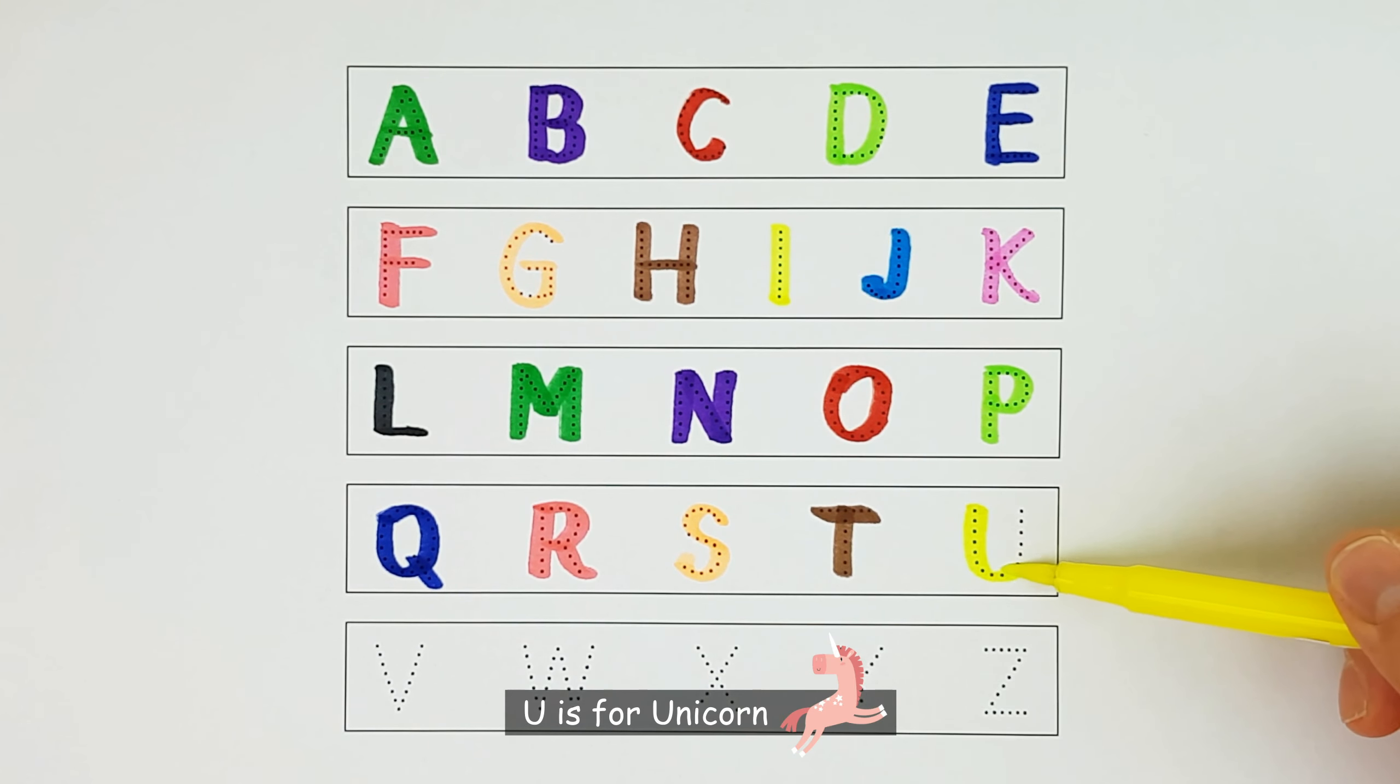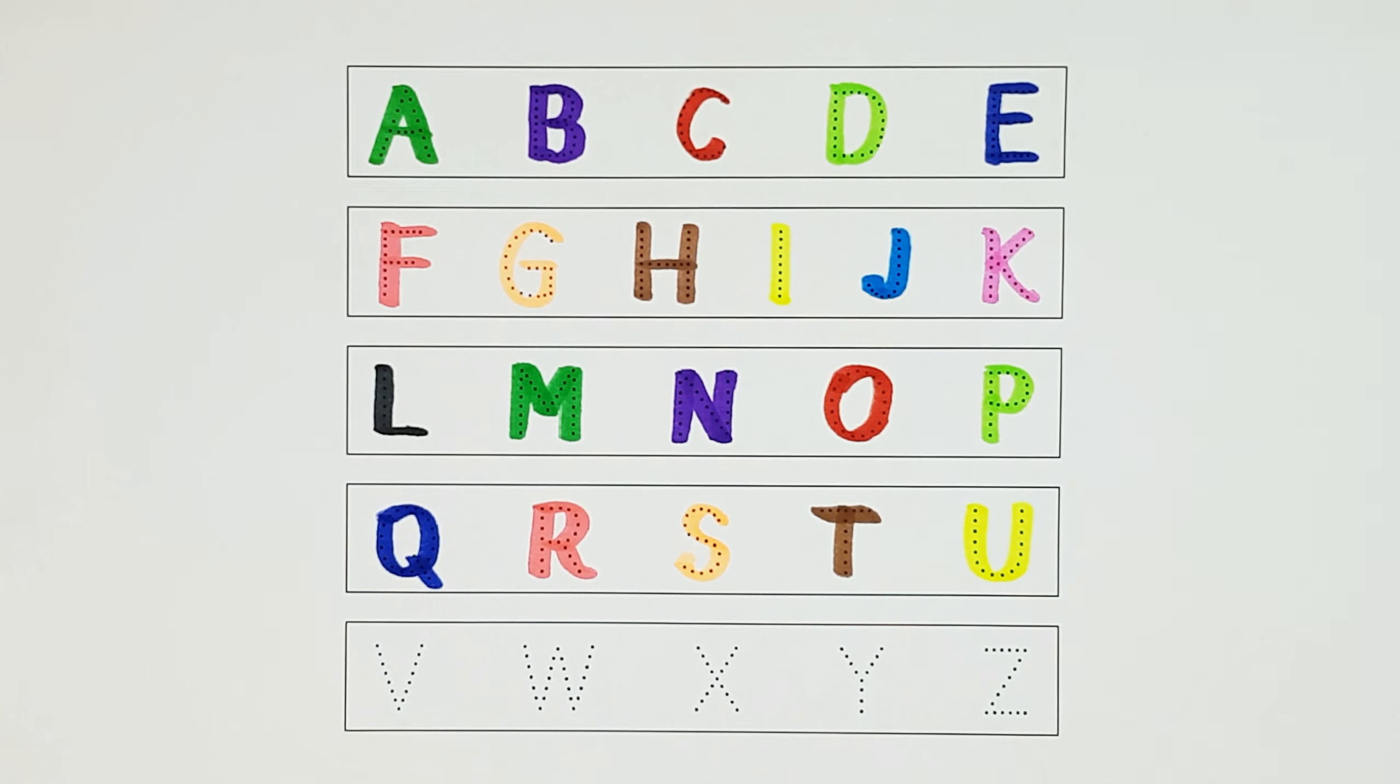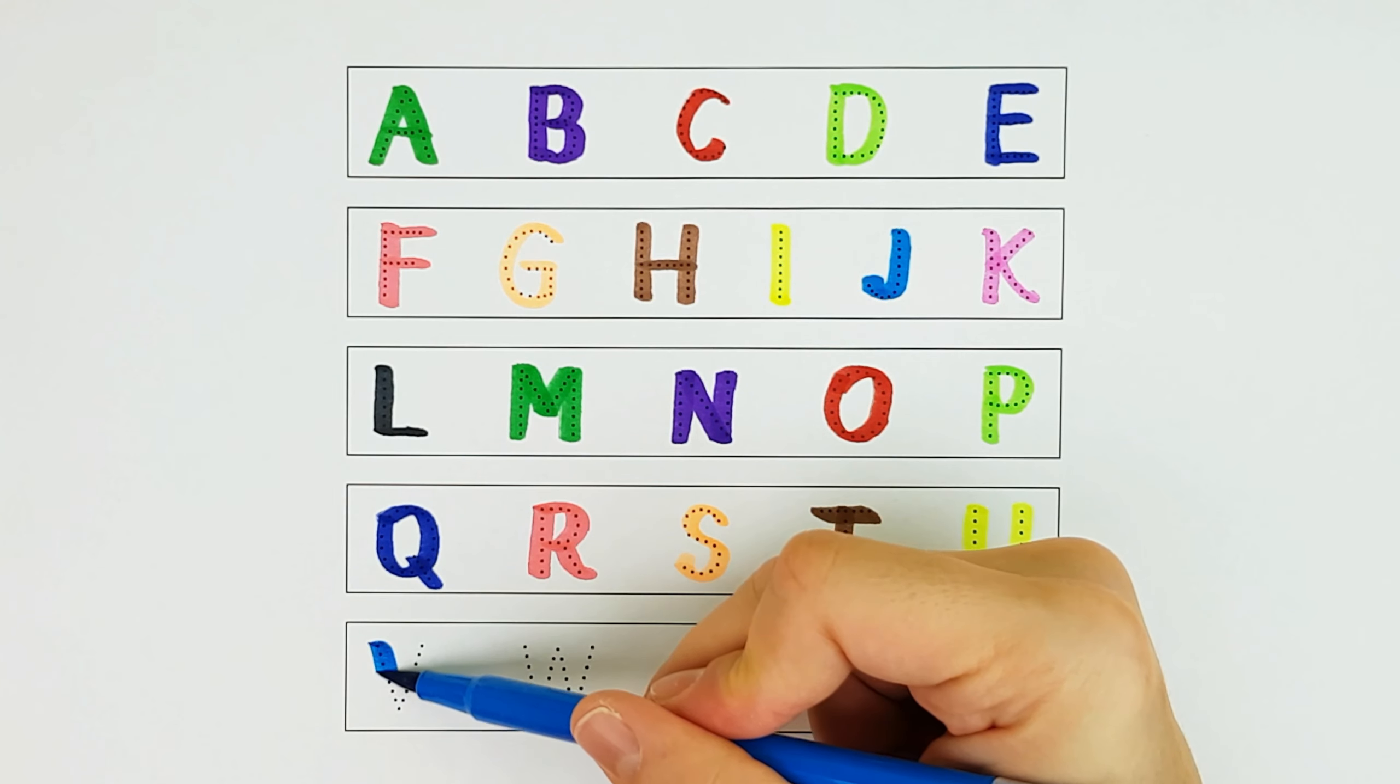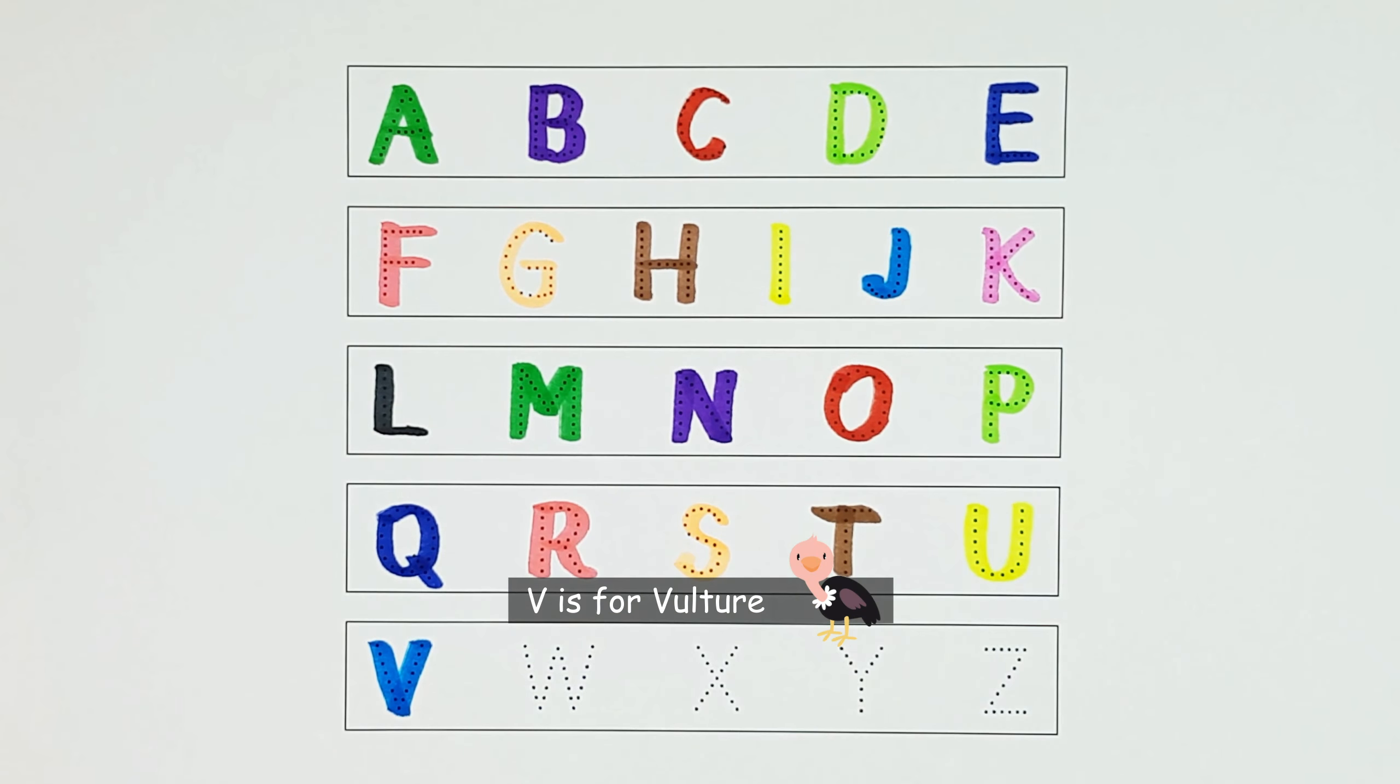U. U is for unicorn. U. V. V is for vulture. V.